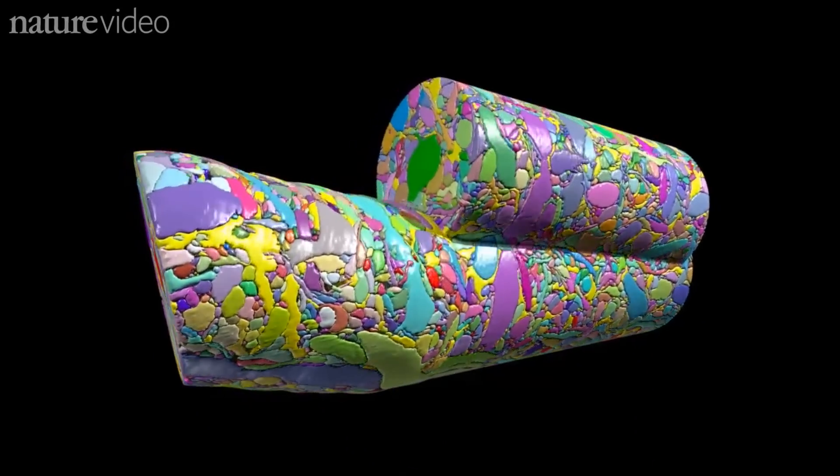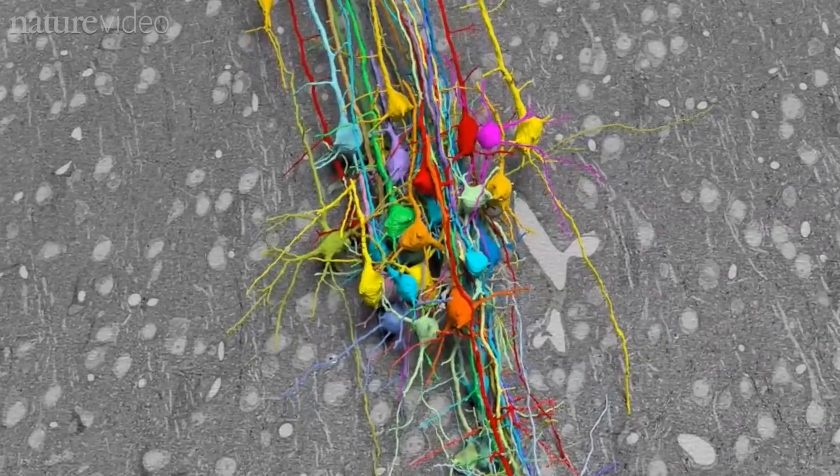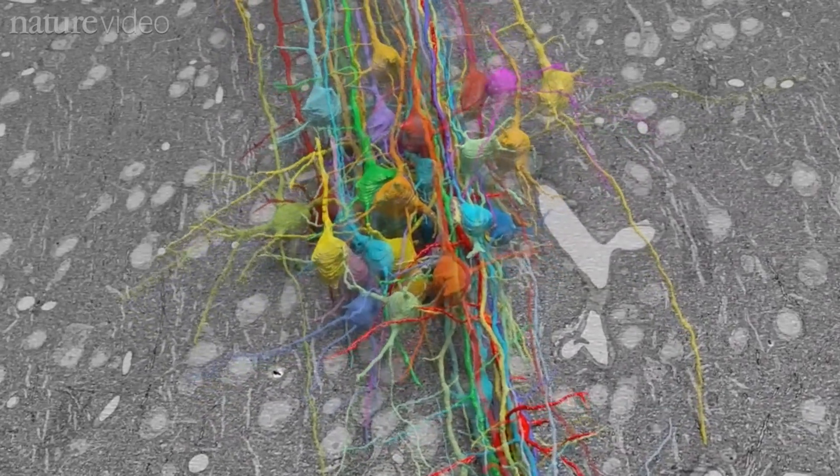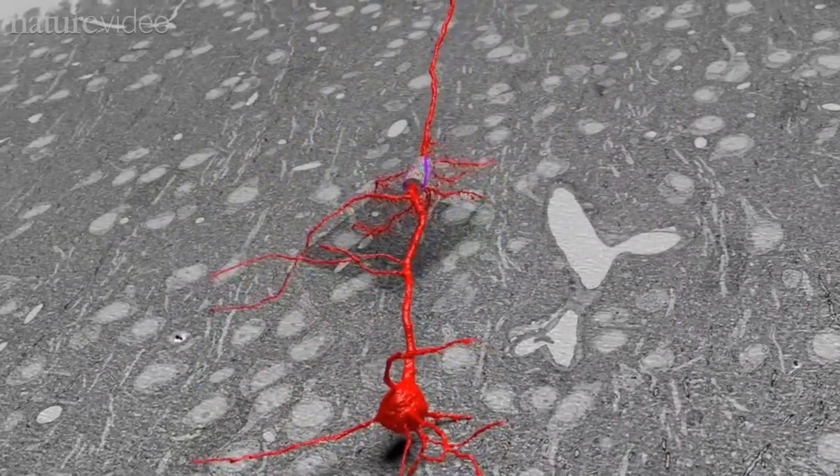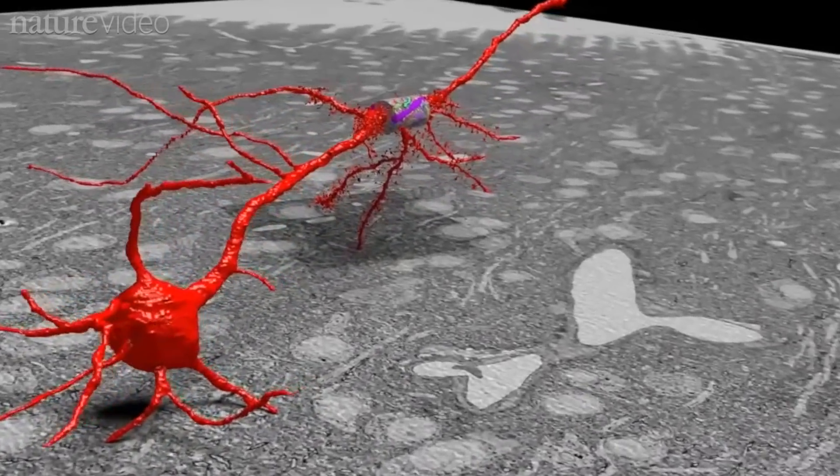It's from a bit of the mouse brain that receives information from the skin. Here are all the neurons which feature in some way in the speck of brain the team focused on. But they were really only able to analyse this much.